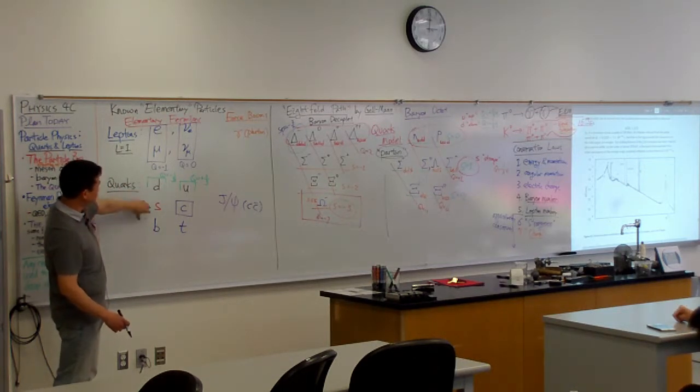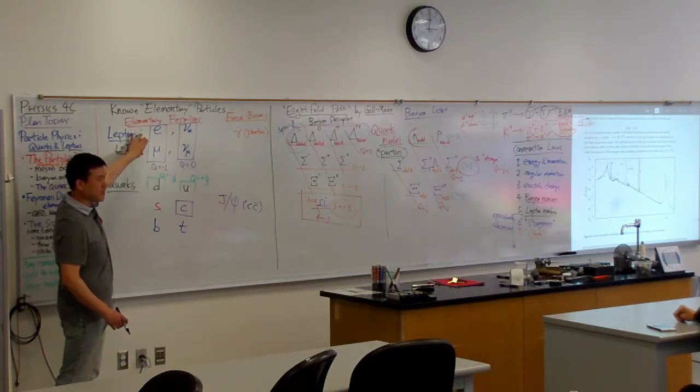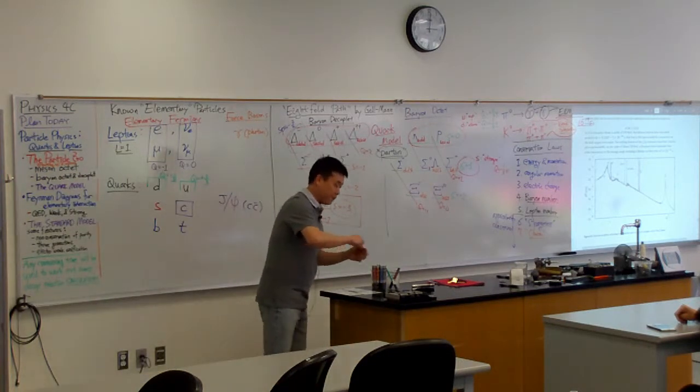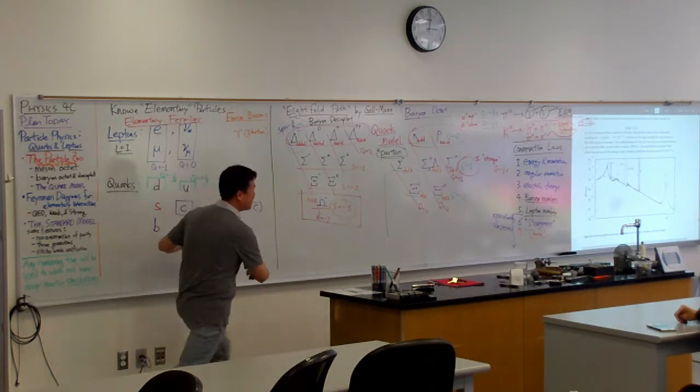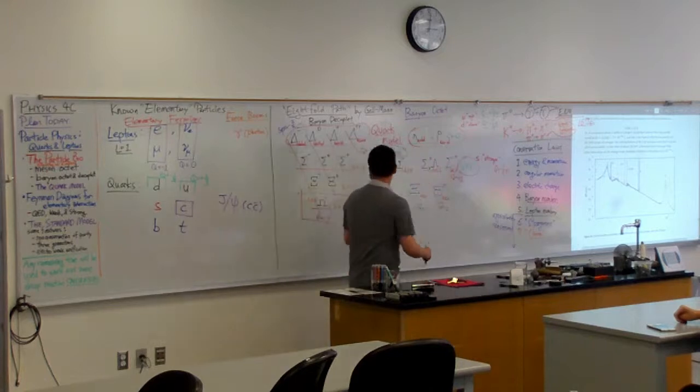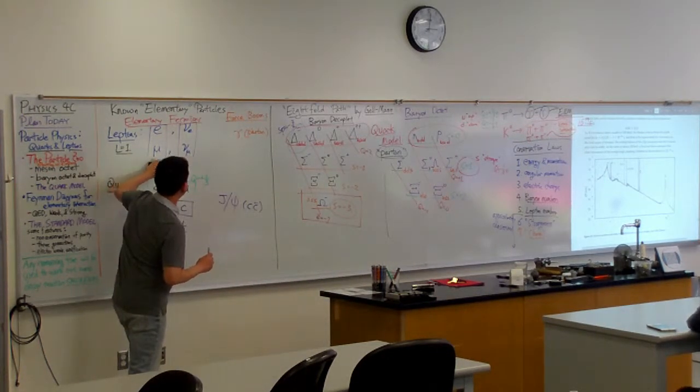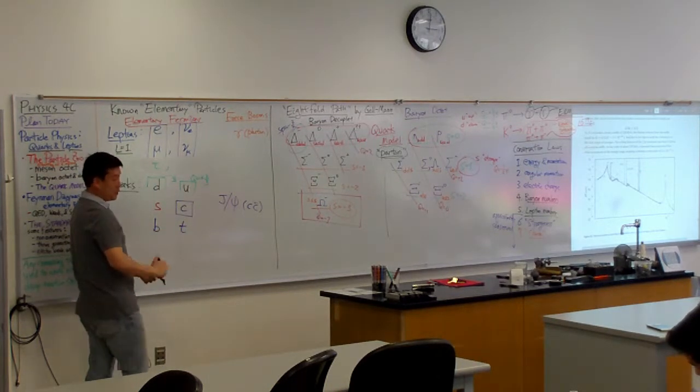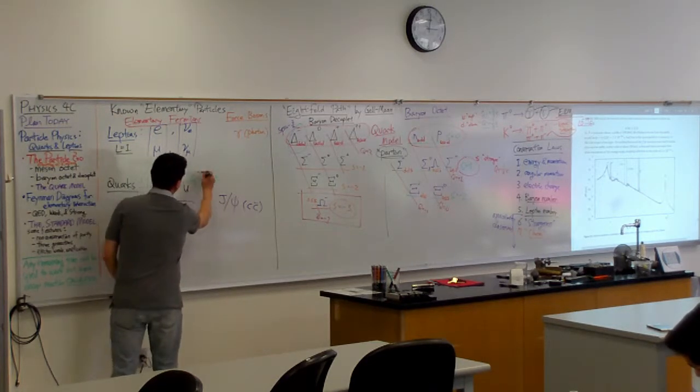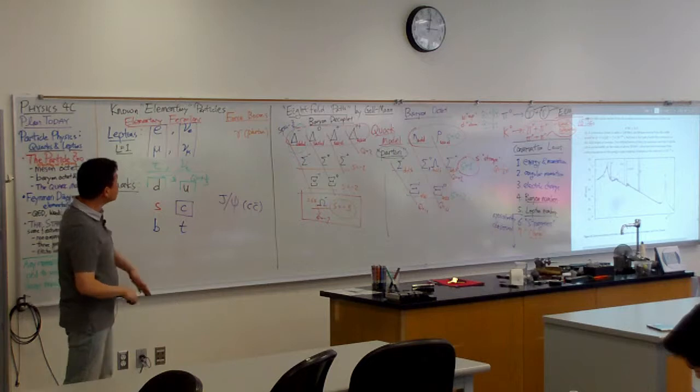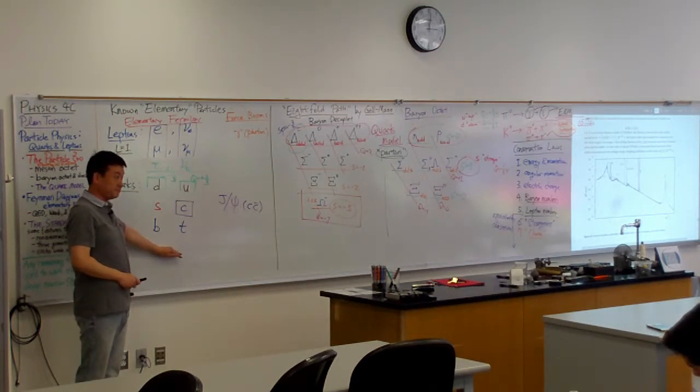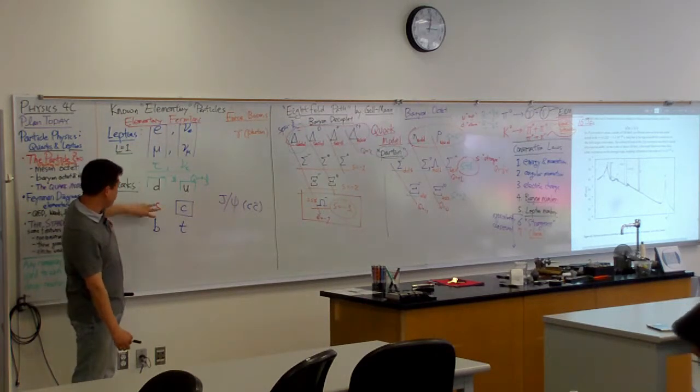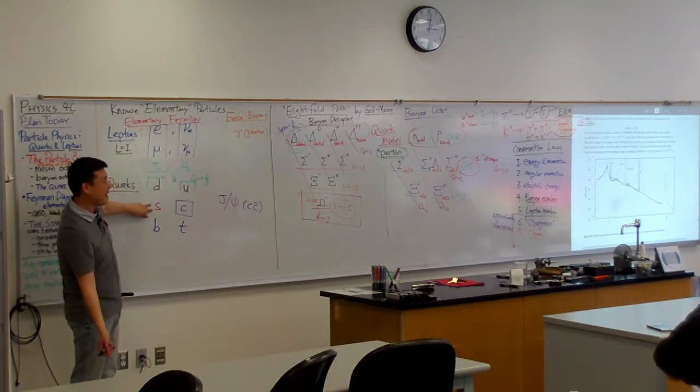And once you have third generation of quark, then you would begin to wonder, hey, three generations, two generations, that doesn't really match. So that probably means there's a third generation of leptons. And so for the purpose of this discussion, let's pretend that's what actually happened. And someone goes looking for the third generation of leptons, and they find it. And that lepton is called tau lepton. And we assume there's a neutrino associated with it. We call that tau neutrino. So these are the 12 elementary fermions that we know. Three generations of leptons, consisting of six elementary particles, and three generations of quarks, consisting of six elementary quarks.